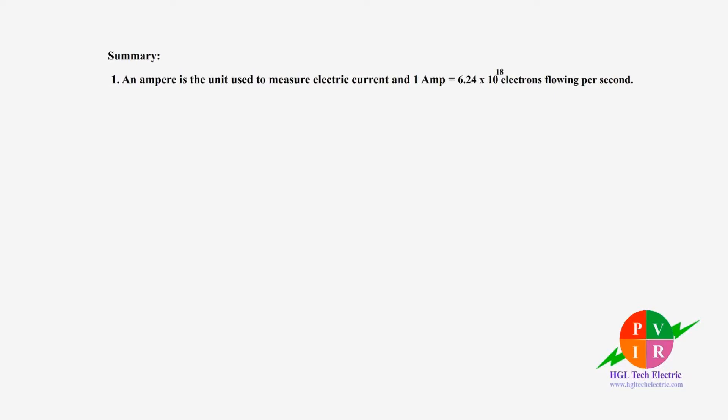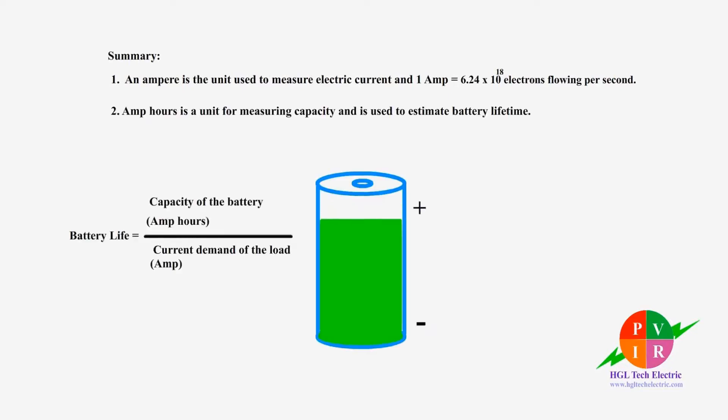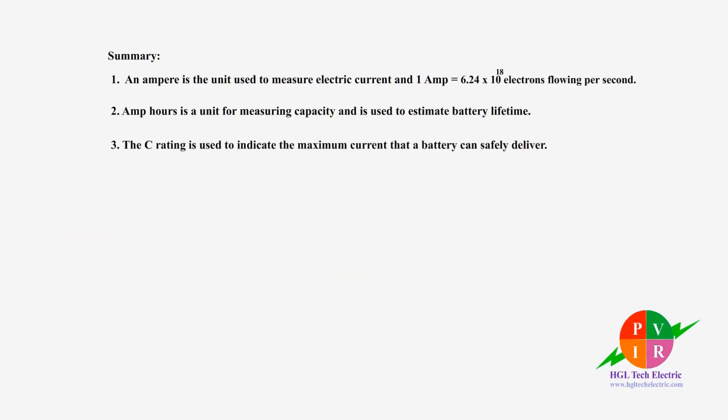An ampere is the unit used to measure electric current. Amp hours is a unit for measuring capacity and is used to estimate battery lifetime. The C rating is used to calculate the maximum amount of current that a battery can safely supply.